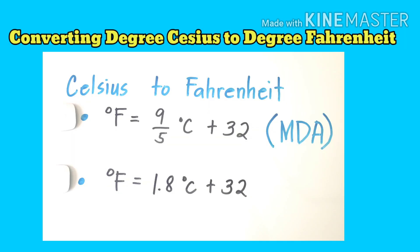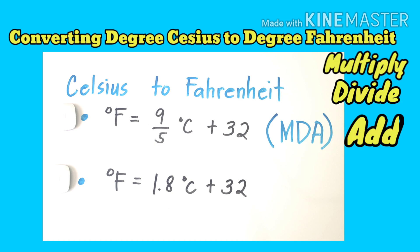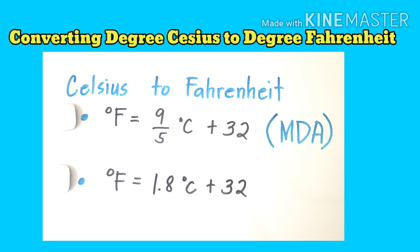We can convert degree Celsius to degree Fahrenheit using the following formulas. Formula one: degree Fahrenheit equals 9 over 5 times degree Celsius plus 32. In this formula, we apply the MDA process — that is multiplication, division, and addition. The second formula is degree Fahrenheit equals 1.8 times degree Celsius plus 32.